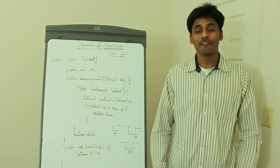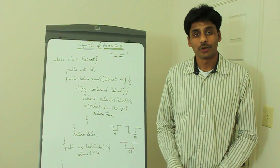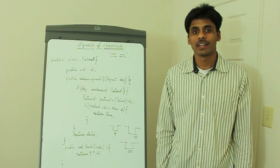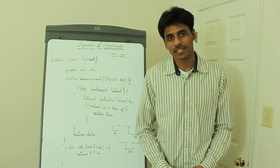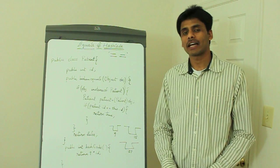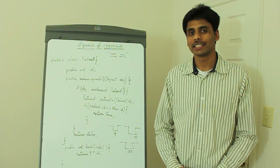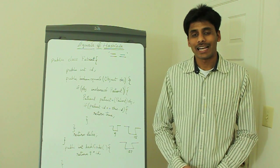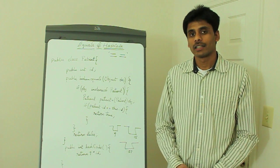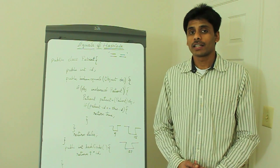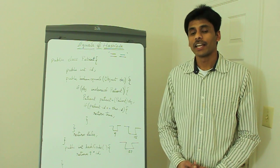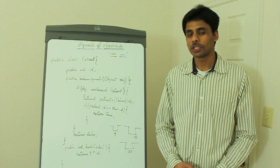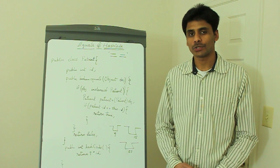Every Java class you write inherits the java.lang.Object class. Although you don't do this explicitly, the Java compiler adds this when it generates the bytecode out of your Java classes. As a result, all your Java classes inherit some rich methods, and two such methods are the equals and hashCode methods.